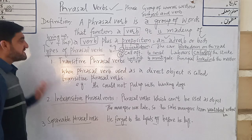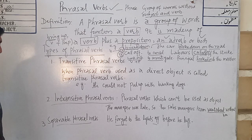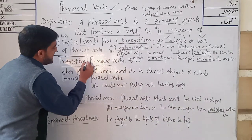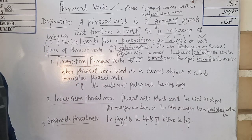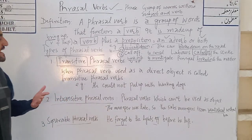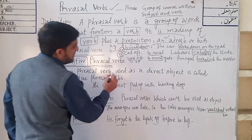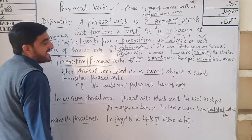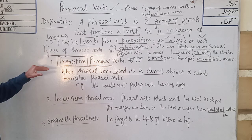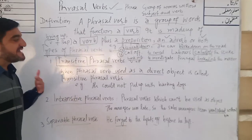Dear students, phrasal verbs are further divided into various categories. I am going to discuss three major types today. The first one is transitive phrasal verb. Transitive verbs are those verbs which always demand an object. So transitive phrasal verbs are those phrasal verbs which are used with a direct object.